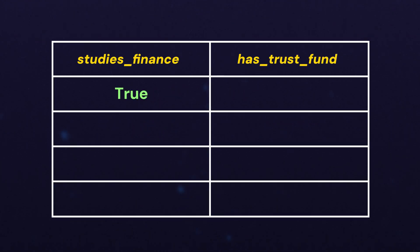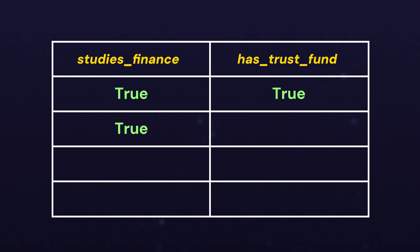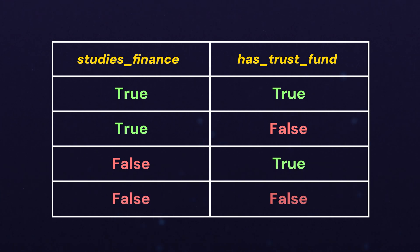The interesting thing about this partner class is that it really has four possible combinations of values: studies finance can be true and has trust fund also true; studies finance true and has trust fund false; studies finance false and has trust fund false. And that seems manageable.